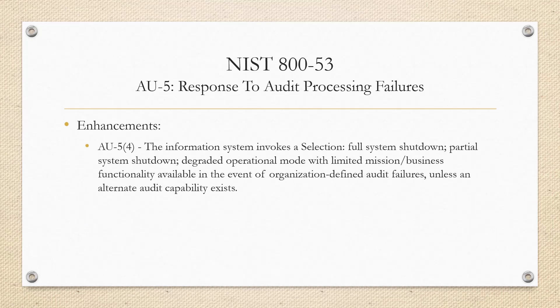The last enhancement is Enhancement 4. That reads: the information system invokes, whether it's a full system shutdown, partial shutdown, or a degraded operational mode, in the event that there is an audit processing failure. A couple of things you have to define here: what's your organizational defined audit failure, and what is your action going to be — whether that's a full system shutdown or anything like that? Same thing, this is a maturity model thing.